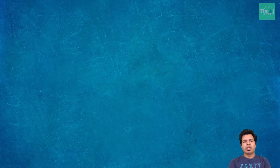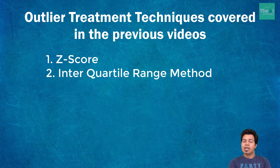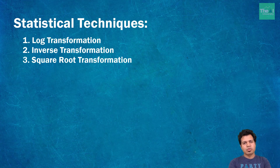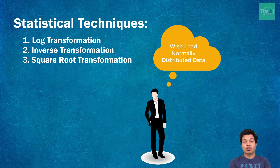In the previous video, I covered numerical techniques for outlier detection and treatment using methods such as z-score and interquartile range. As part of making data normally distributed, we can use statistical techniques like log transformation, inverse transformation, and square root transformation. From a parametric statistics perspective, it's a data scientist's dream to always get normally distributed data to build near-perfect machine learning models.